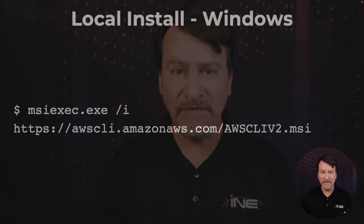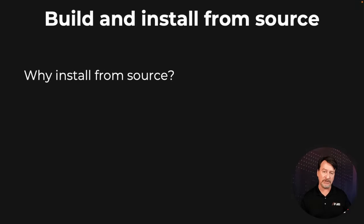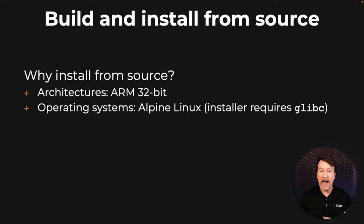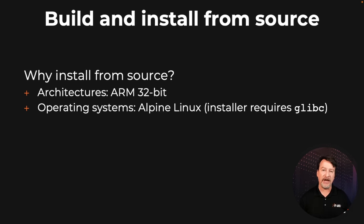However, there are some cases where it will not work. In those cases, you've got to download and install from source, and it's very easy to do. There's a lot of documentation out there, but for specific cases we're talking about situations where you have an unusual architecture like ARM 32-bit, or maybe you're running Alpine Linux. Alpine Linux doesn't have glibc, which is used by the package manager.